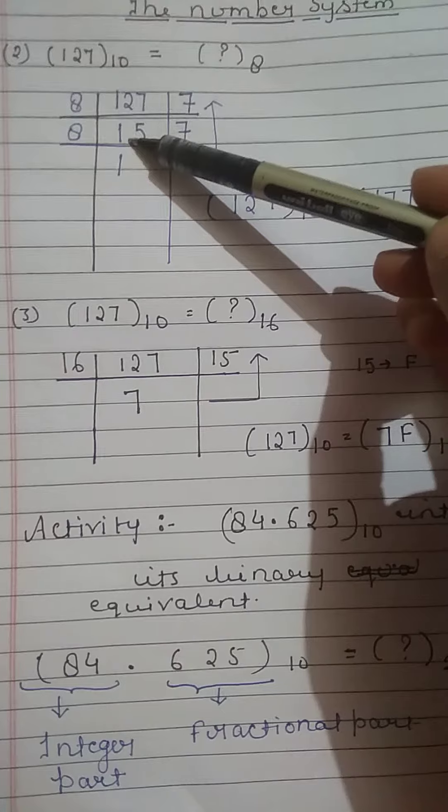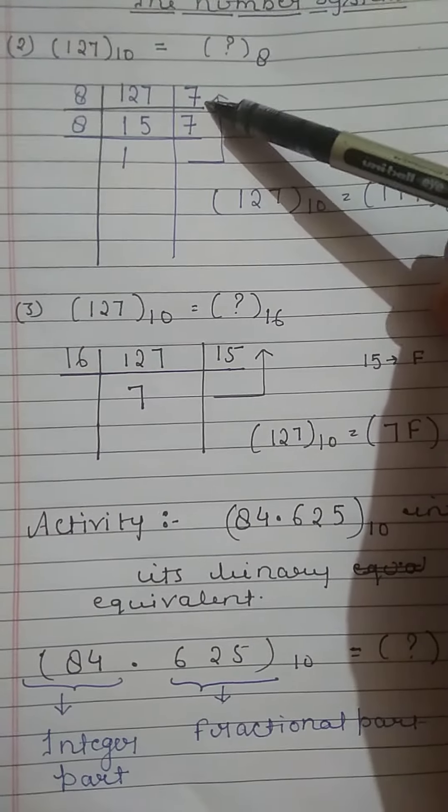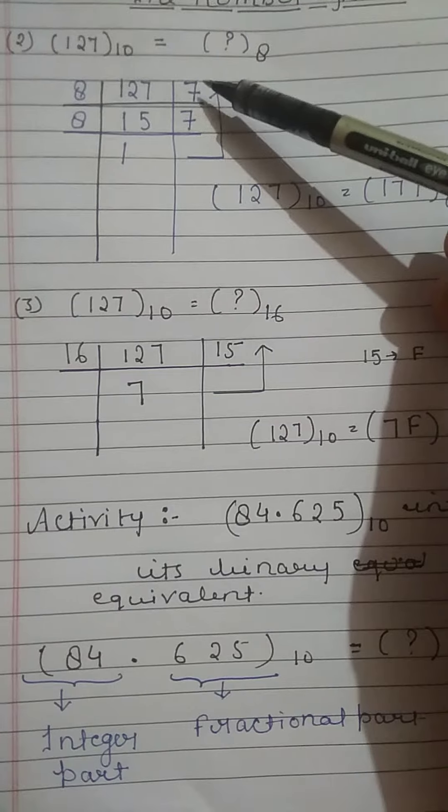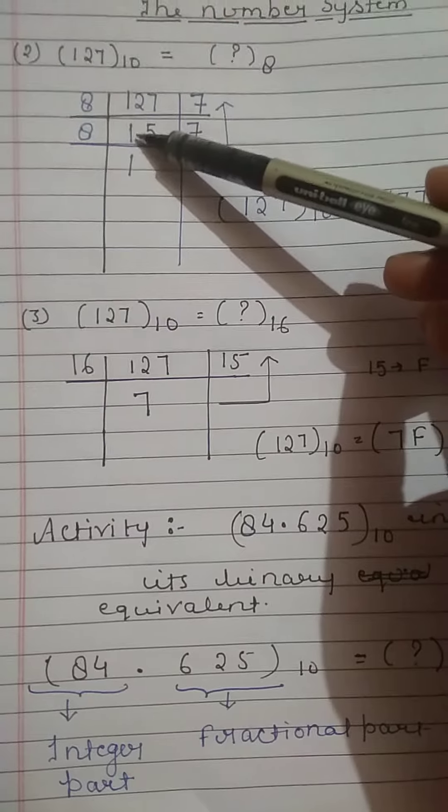8 times 8 is 64, and 8 times 15 is 120. You will get the remainder 7. Note down the remainder on the right side of the quotient. Now 15 is divisible by 8.